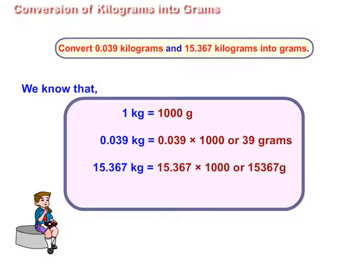Similarly, to convert 15.367 kilograms into grams, we multiply it by 1000. Thus, 15.367 kilograms are equal to 15,367 grams.